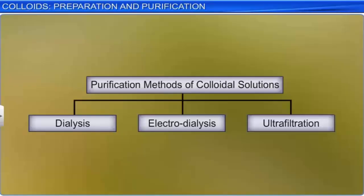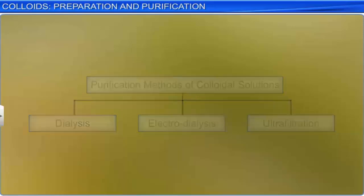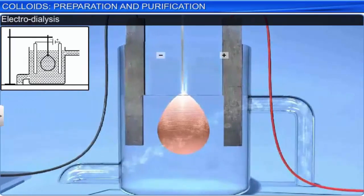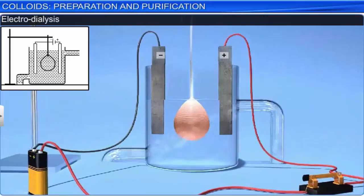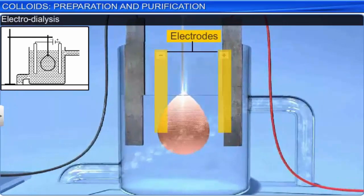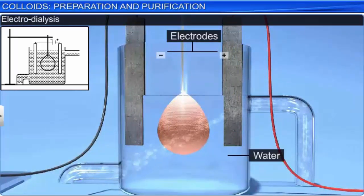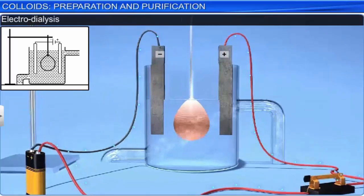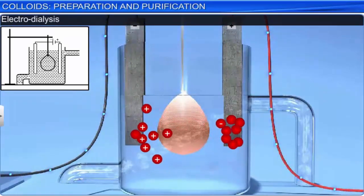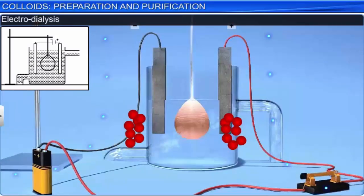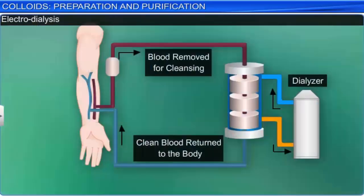A modified form of dialysis is known as electrodialysis. The ordinary dialysis process is a slow process. To hasten the process of purification, dialysis is carried out by applying an electric field. Two electrodes are placed in the water compartment. When an electric field is applied across the electrodes, the ions of the electrolyte present as the impurity diffuse towards the oppositely charged electrodes at a faster rate. An important application of dialysis is in artificial kidney machines, where it is used to cleanse the blood of patients whose kidneys have failed.